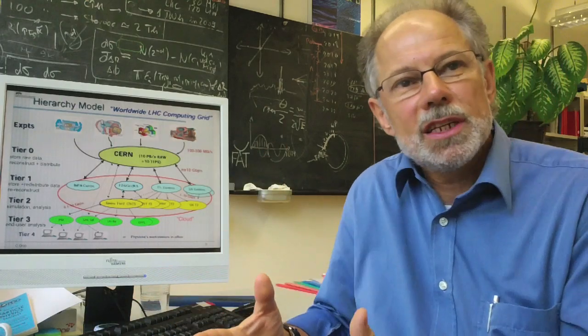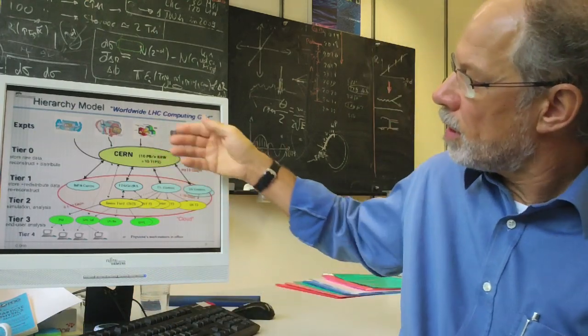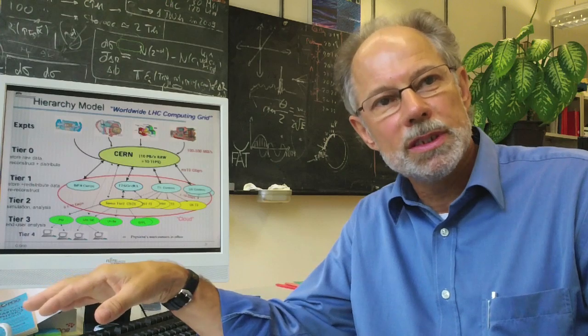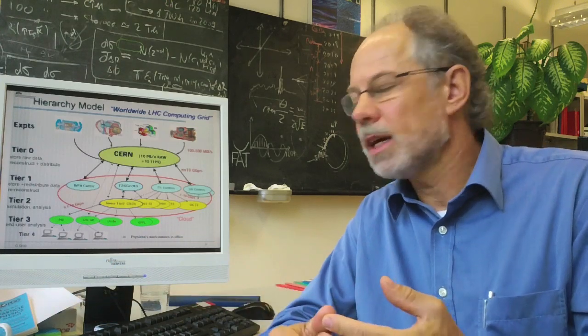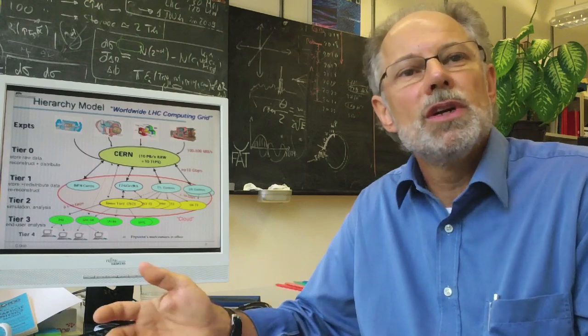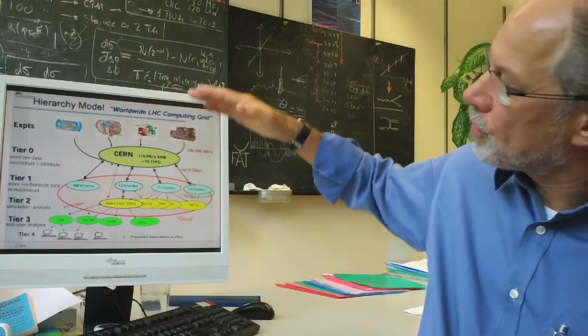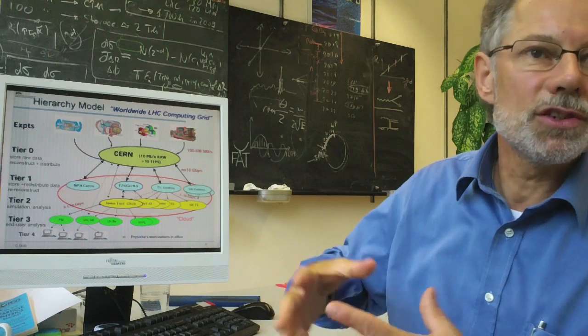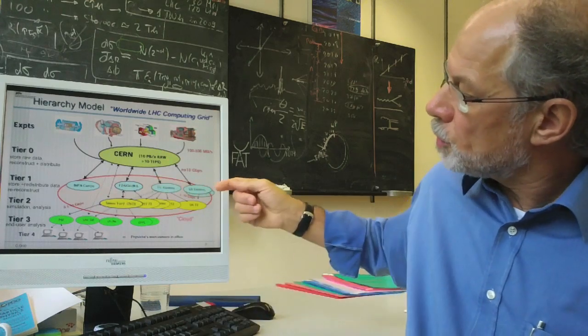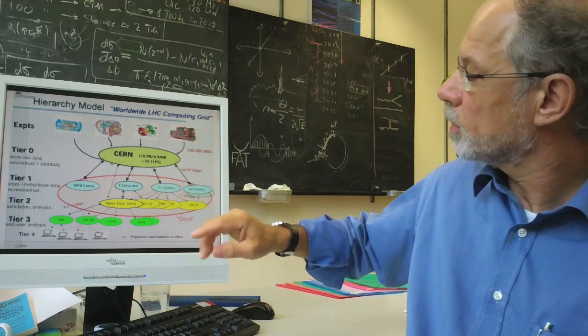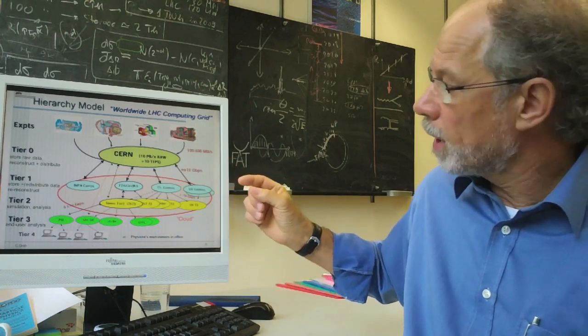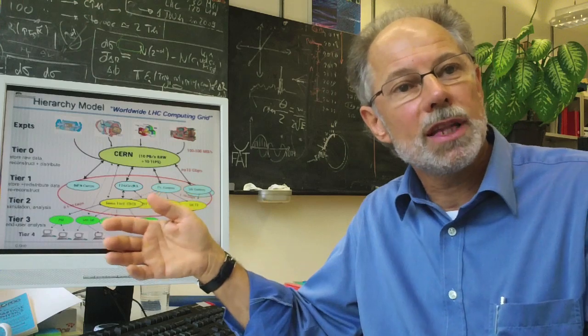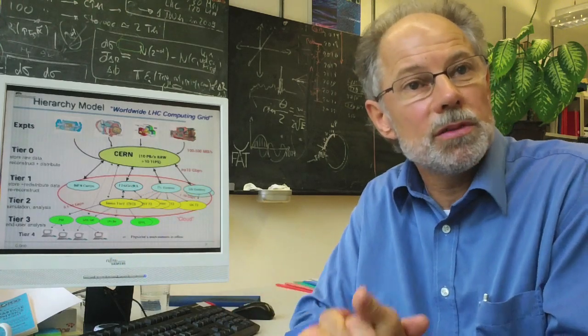So we have a hierarchical structure set up that allows to take the data, store the data, and then redistribute it to different centers in very hierarchical matters all over the world. That requires, of course, very good networks, requires good collaboration among the different centers and a good organization. And this has happened, the whole structure has been set up in sort of levels or tiers, where tier zero is CERN, that's where you store the data, you reconstruct them, and then you distribute them to bigger computing centers like Karlsruhe or INFN or the U.S. centers in Brookhaven or Fermilab.